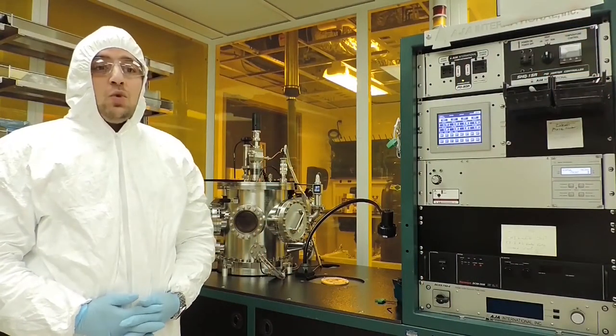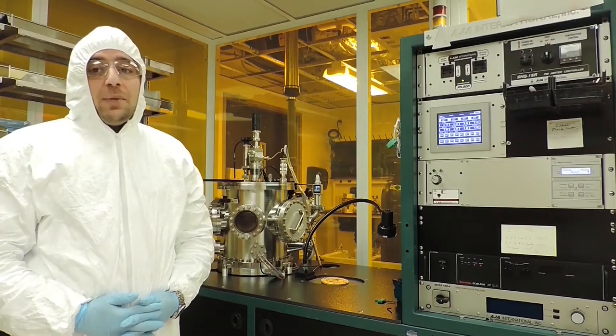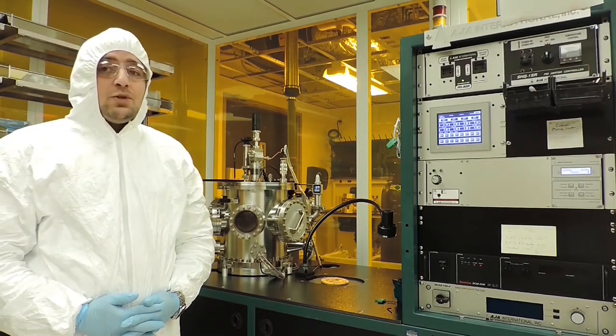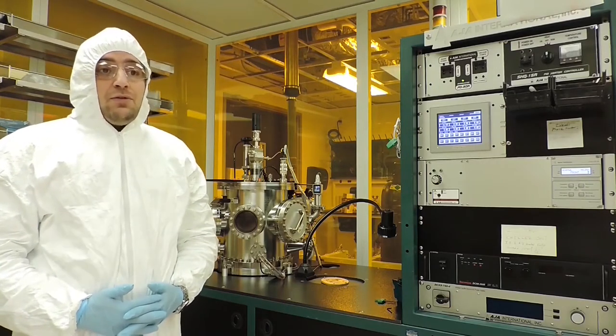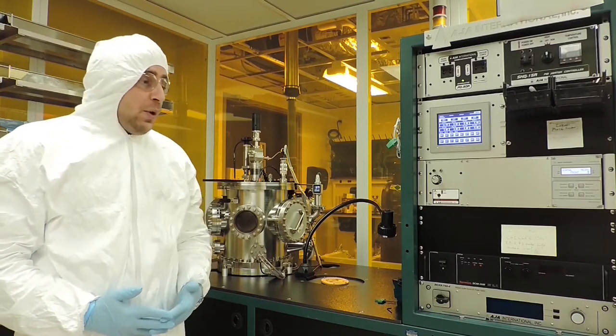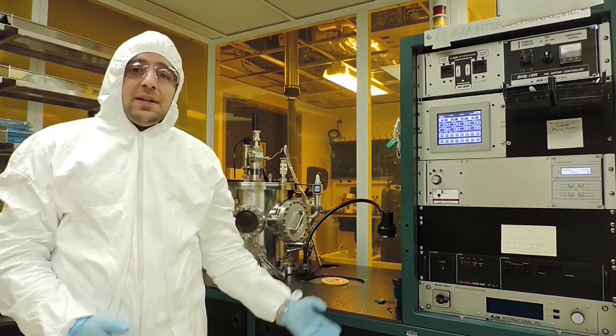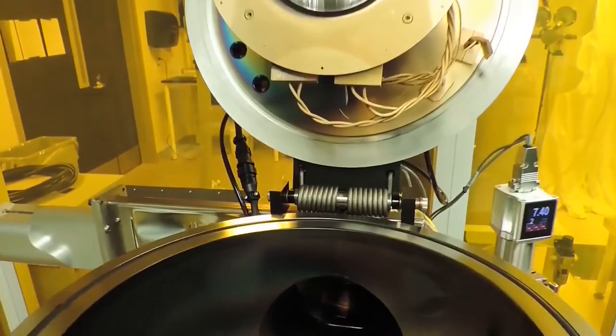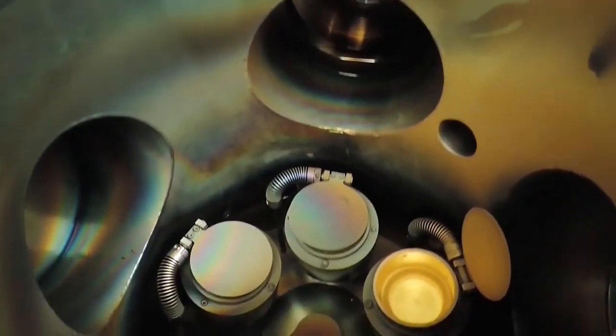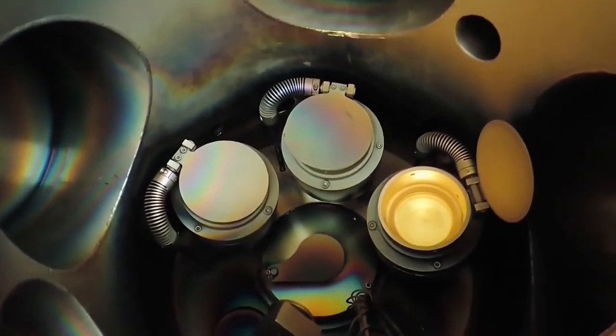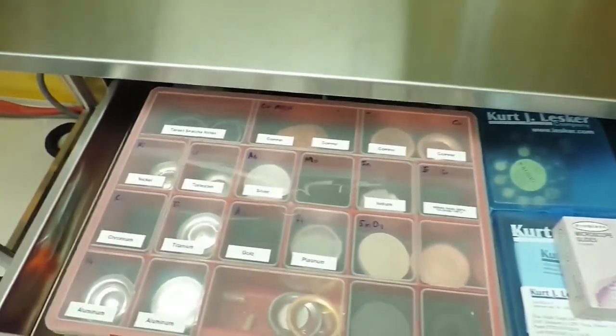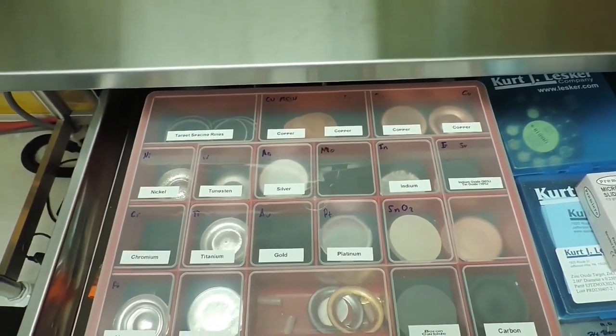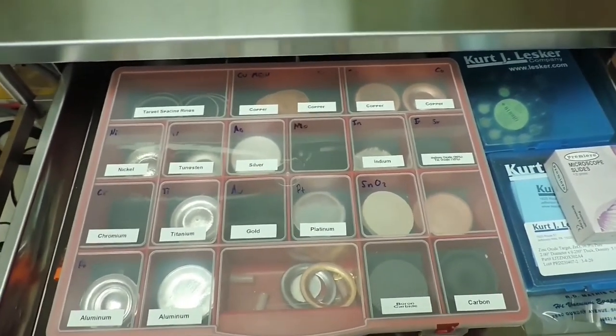We have here a sputtering system, which is an AJA RF-5. The system has the ability to sputter thin films and deposit three different materials in a single process, either with DC or RF biasing. Here we can see inside the vacuum chamber the three different sputtering sources, as well as an external source for thermal evaporation. And here you can see the different materials or sputtering targets that we can use, such as gold, chromium, aluminum, and tin oxide.